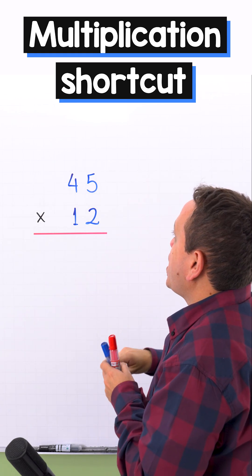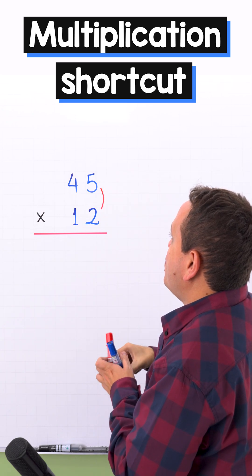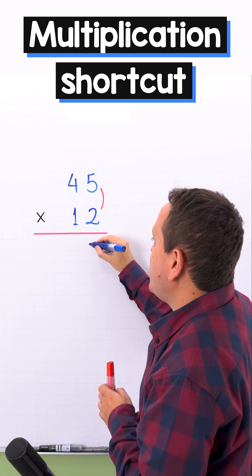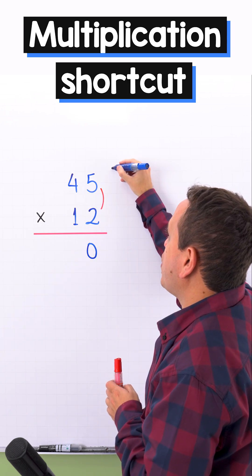45 times 12. First, we multiply the digits on the right side. And 5 times 2 give us 10. I'm going to write the 0 and carry the 1 to the next column.